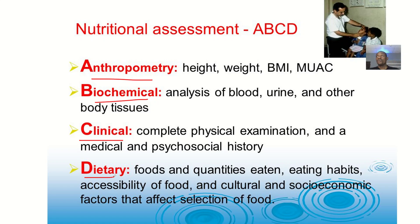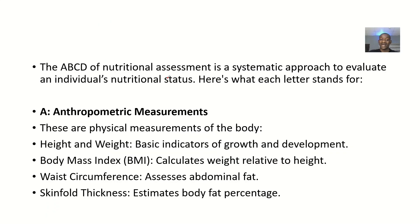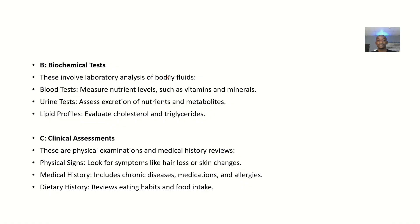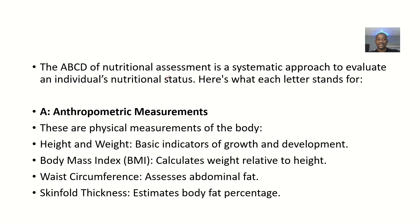All these collectively form the components of nutritional assessment. A common exam question is: the direct method of nutritional assessment is represented by the letters ABCD — what do the letters stand for? So you have to explain: A is anthropometry, B is biochemical tests, C is clinical assessment, and D is dietary assessment. The ABCD of nutritional assessment is a systemic approach to evaluate an individual's nutritional status.